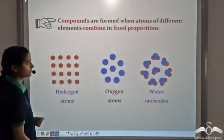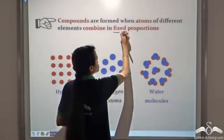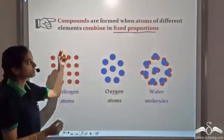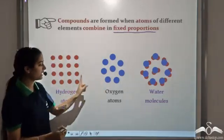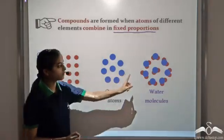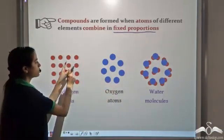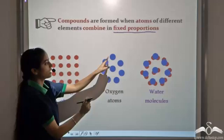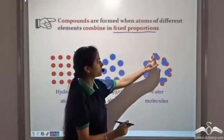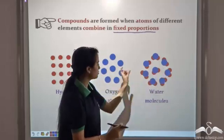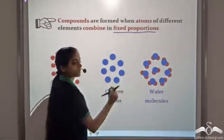Similarly, when atoms combine, they combine in fixed proportions to form compounds. So compounds are formed when atoms of different elements combine in fixed proportions. So these are hydrogen atoms, these are oxygen atoms. So when two hydrogen atoms and one oxygen atom combine, they form a water molecule.